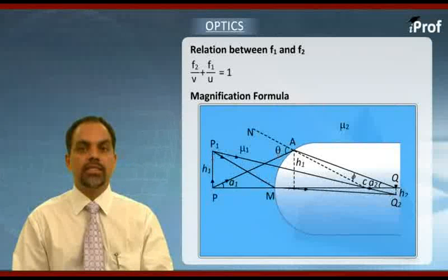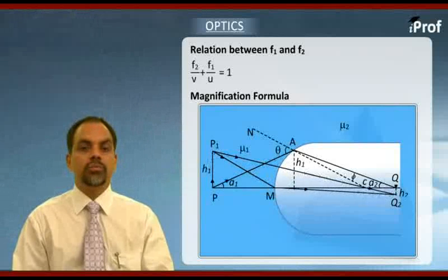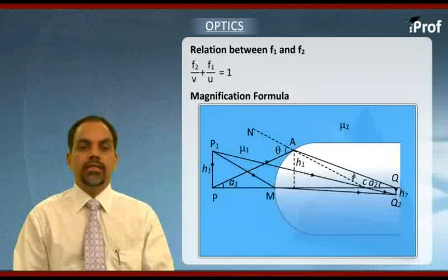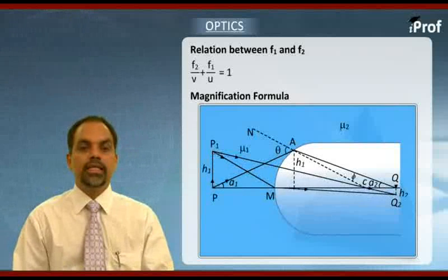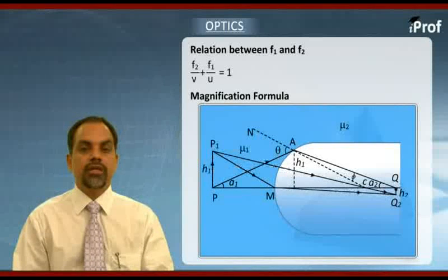Qq1 is our corresponding image. We can see it is inverted in this case and we are denoting the height of image by h2. Let's mark the angle of incidence, angle of refraction, and other angles alpha 1 and alpha 2.